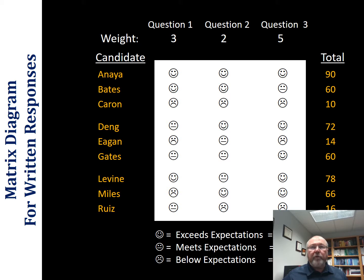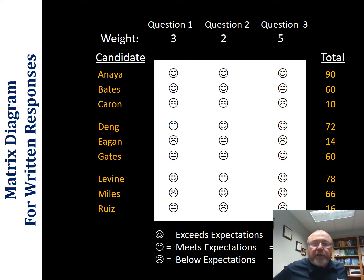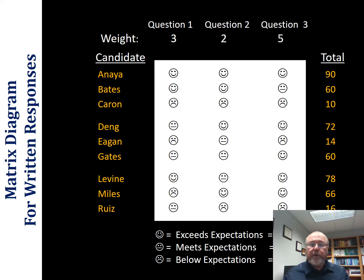Some comments worth making: when you have exceeds expectations, you need to clearly identify what the expectations are, what exceeds expectations looks like, what meets those expectations, and what below expectations looks like. This is particularly important in human resource management or a hiring practice — you want to protect the process and the people in it, make sure it's a fair process. If you don't have those things very clearly determined, your process becomes more easily challenged.